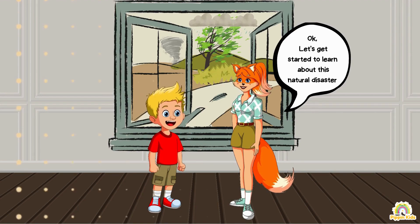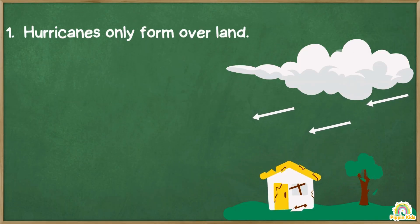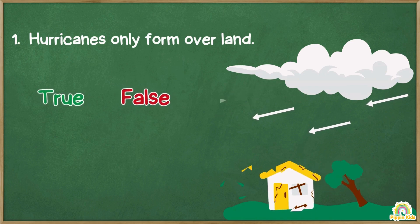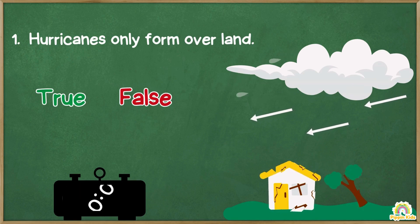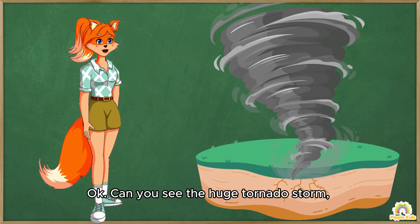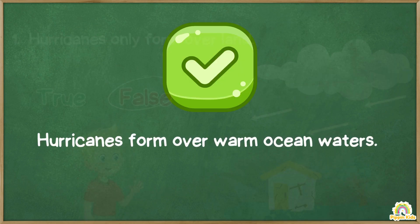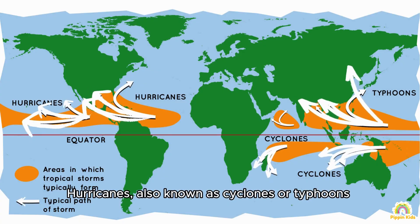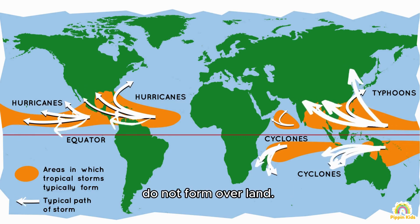Question number one: hurricanes only form over land — true or false? Can you see the huge tornado storm? Can this tornado form from land? False. Correct! Hurricanes form over warm ocean waters. Hurricanes, also known as cyclones or typhoons in different parts of the world, do not form over land.